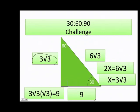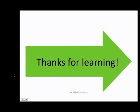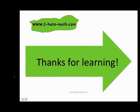Conclusion: the 30-60-90 triangle will always have the same ratio — x, x times the square root of 3, and 2x. You just need to solve for x. Once you have x, which is also the value of the 30-degree angle, you can complete the whole triangle. I hope you learned a lot in this lesson — thanks for learning!